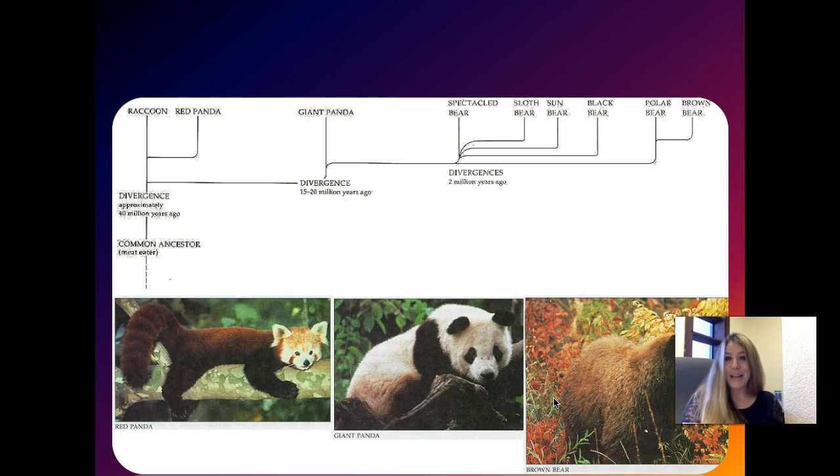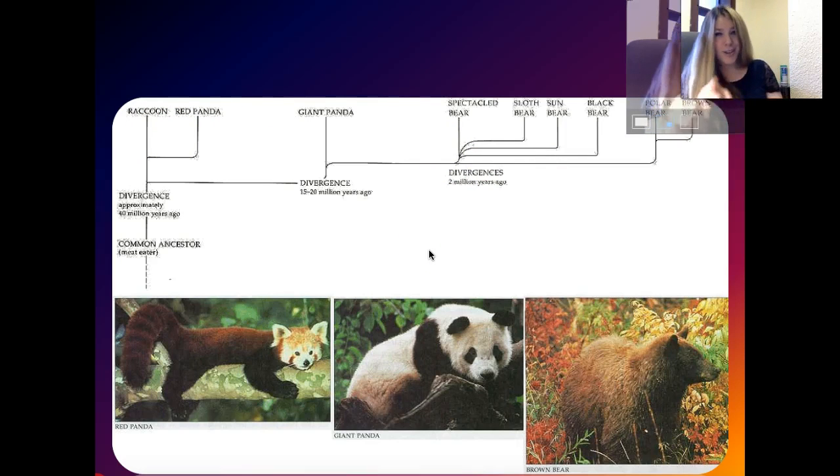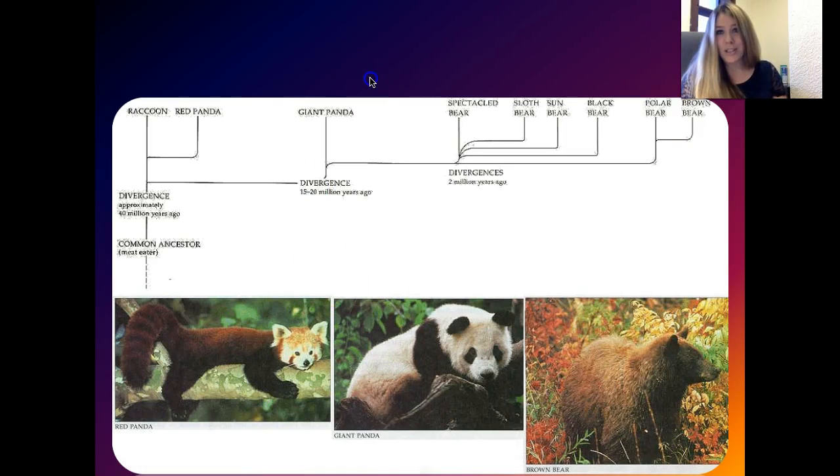For example, this is how they figured out that giant pandas are actually more closely related to red pandas than they are to bears. So you can see that by doing DNA-DNA hybridization, here's your giant panda. And they figured out that he diverged from the common ancestor about 15 to 20 million years ago. So here's your raccoon and here's a red panda. So the giant pandas are closer related to raccoons and red pandas than they are to actual bears. So here is a sloth bear, sun bear, black bear, polar bear, brown bear. That was 2 million years ago. So the divergence was much closer to the raccoon than to the bear. So giant pandas are actually kind of variations on a raccoon as opposed to variations on bears.